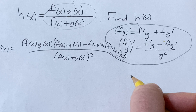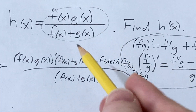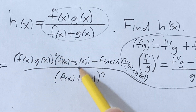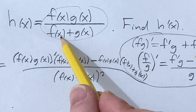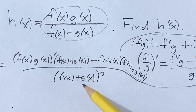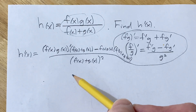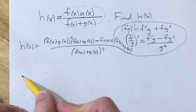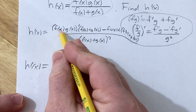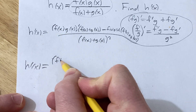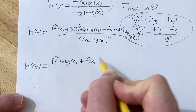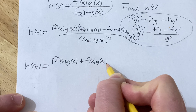Let's check our work. We've taken the derivative of the top — which I haven't actually computed yet — times the bottom, minus the top times the derivative of the bottom, which we went ahead and did because it's really easy: f prime plus g prime, over the bottom squared. Now we're going to actually take this derivative of the top using the product rule, where f is the first and g is the second.